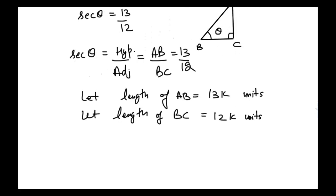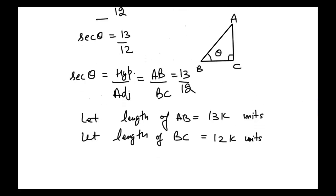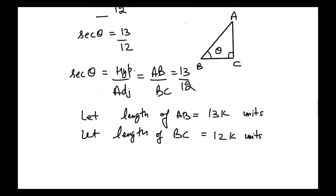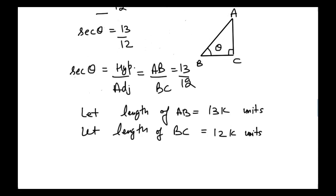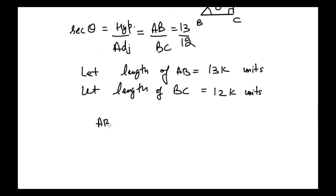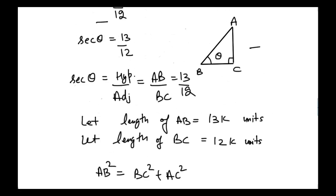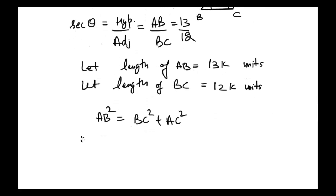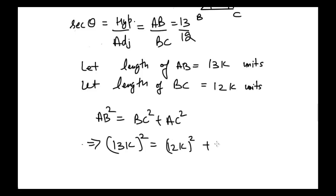From the lengths of AB and BC, we can find the length of AC using the Pythagorean theorem. Applying the Pythagorean theorem on triangle ABC, we write: AB squared is equal to BC squared plus AC squared. We have AB equal to 13k, so putting in the values we get 13k squared equal to 12k squared plus AC squared.